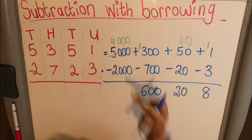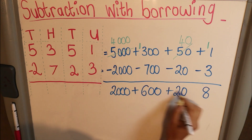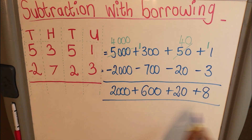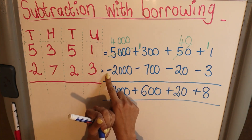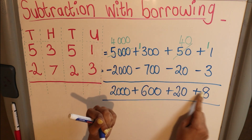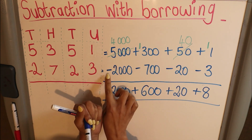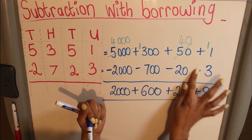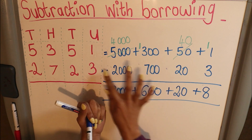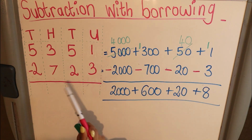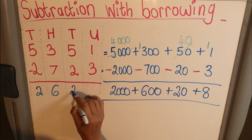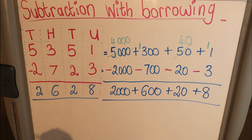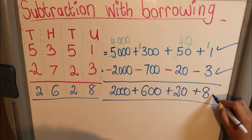Then four thousand minus two thousand is two thousand. To help you remember, I'll change the subtraction signs to a different color so you remember those must be minus. The final answer is two thousand six hundred and twenty-eight, and I draw a line to indicate that's my answer. Your mark allocation will look like this: one, two, three, four.